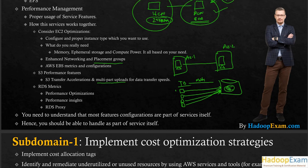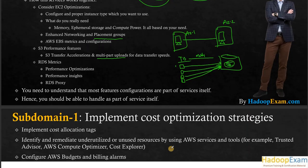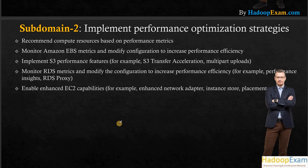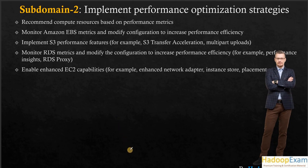For RDS, you should know RDS metrics and use Performance Insights for performance optimization of your relational databases. Most configuration for performance is part of the service itself. You should also understand when to use Spot Instances. Sub-domain 2 covers recommending compute resources based on performance metrics, modifying EBS configuration, and implementing S3 performance features.